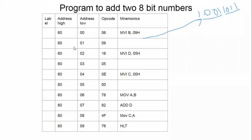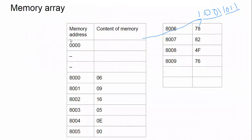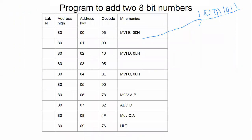Now if you look at the memory layout, some locations are used by the operating system and the microprocessor for its own internal operations. The user memory starts after that. Our data is written there: 06 is the hex code equivalent for MVI B, then 09 is the data — each occupying one 8-bit memory location. Then MVI D, 05: for MVI D the equivalent is 16, and 05 is the data. Then MVI C, 00: MVI C has 0E and 00 is the data.